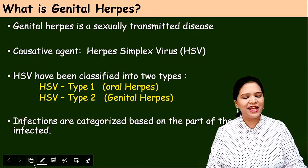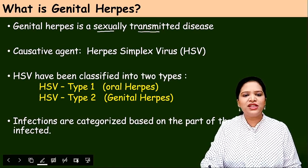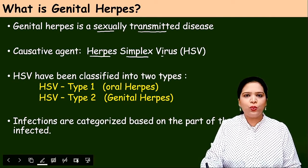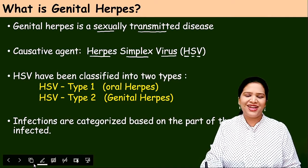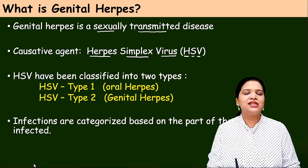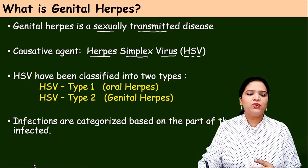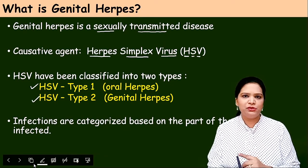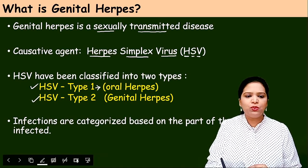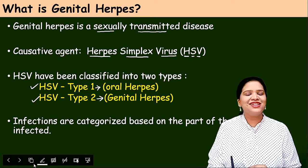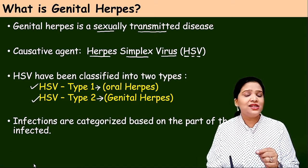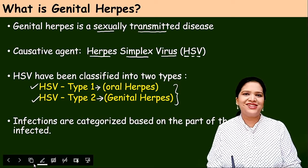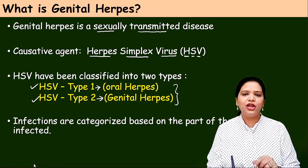Let us see first what is genital herpes. Genital herpes is an important sexually transmitted infection caused by herpes simplex virus, in short form HSV. This herpes simplex virus is of two types: HSV type 1 and HSV type 2. HSV type 1 causes oral herpes and type 2 causes genital herpes, categorized based on which part of the body it affects.